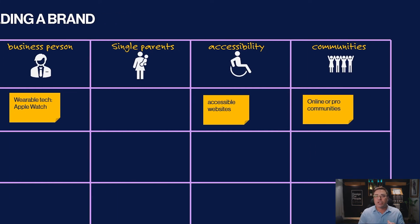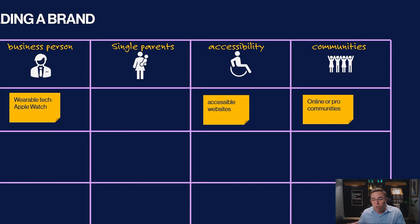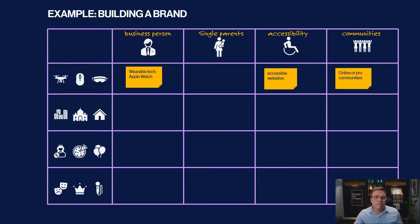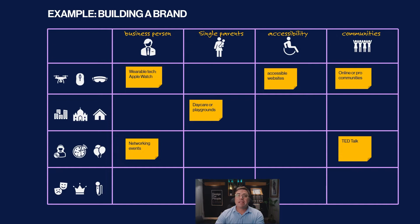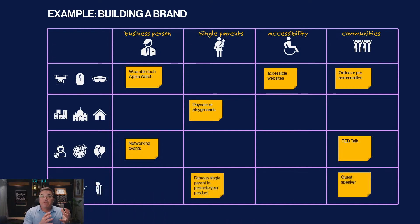When it comes to accessibility, we want to check all of our websites or touch points — are they appropriately colored or designed for this community? And then communities that build themselves around a brand or a topic: where are they? Are they online? Are they pro communities? Where can we fit in? If we look at places, this could be a daycare or playground for single parents. For events, maybe it's a networking event or a TED Talk. For celebrities or influencers, maybe there's a famous single parent who can promote your product, or a guest speaker for one of these online communities.